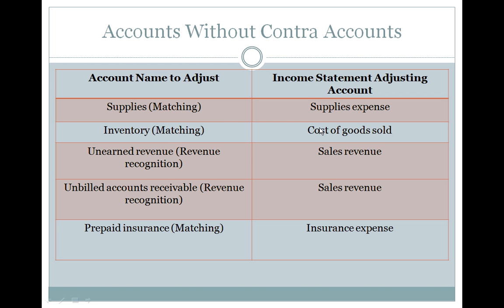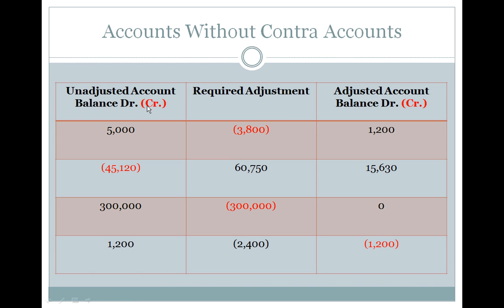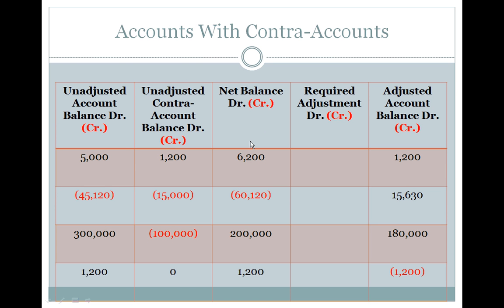Next we look at accounts with contra accounts — things like net accounts receivable and property, plant, and equipment. This is very similar to the previous table: I have the balance before adjustment, what the balance needs to be, and you calculate the required adjustment. We've added a contra account, so you have to calculate the net balance before adjusting to arrive at the adjusted net account balance. You then calculate the required adjustment, either a debit or a credit.